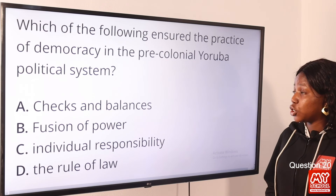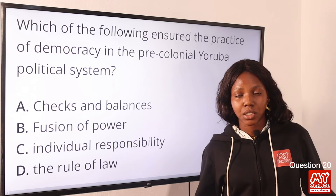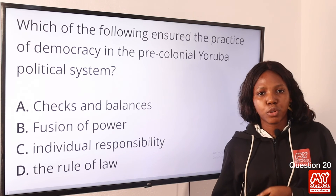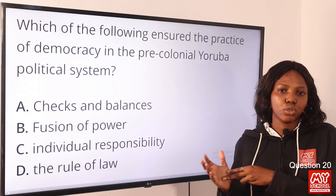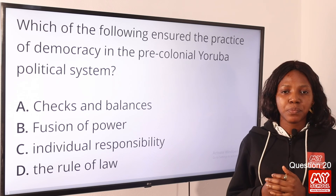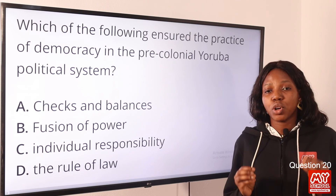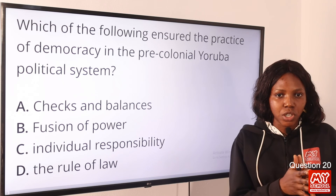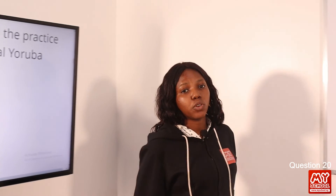Question 20: Which of the following ensured the practice of democracy in the pre-colonial Yoruba political system? The answer is checks and balances. One feature of the pre-colonial Yoruba political system is the presence of checks and balances, which ensured the practice of democracy. There was a separation of power especially between the Oba — the king — and the Oyo Mesi, ensuring too much power was not concentrated in one branch. The answer is option A, checks and balances. We've come to the end of the segment — please do not forget to hit the like button, click subscribe, and tap the bell notification to get informed as soon as we release the next videos.